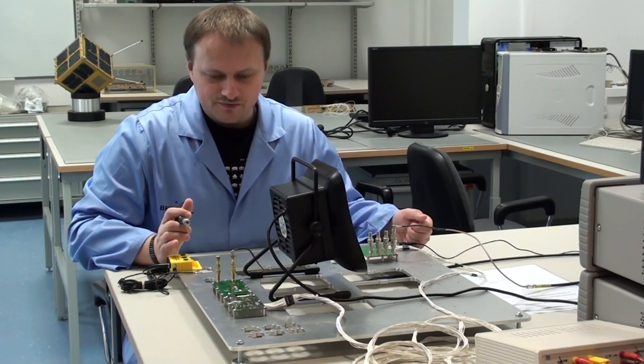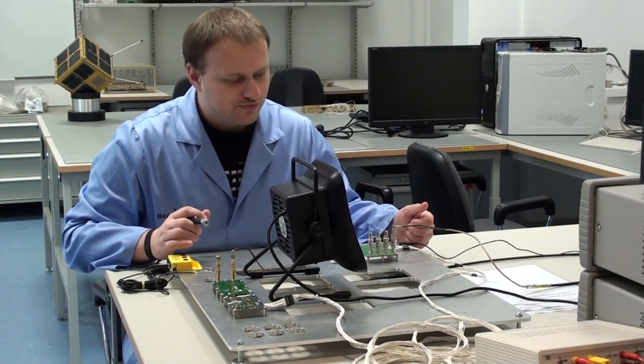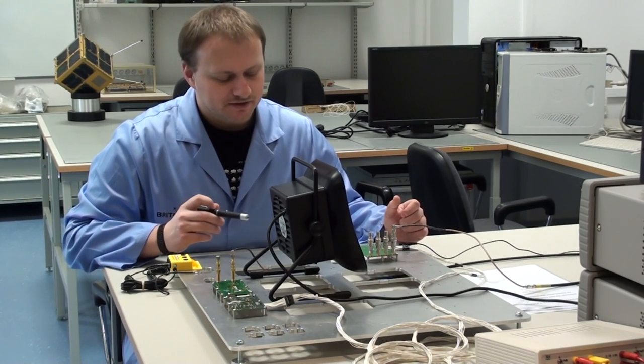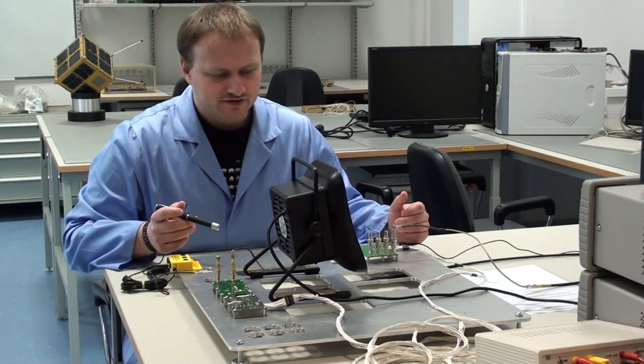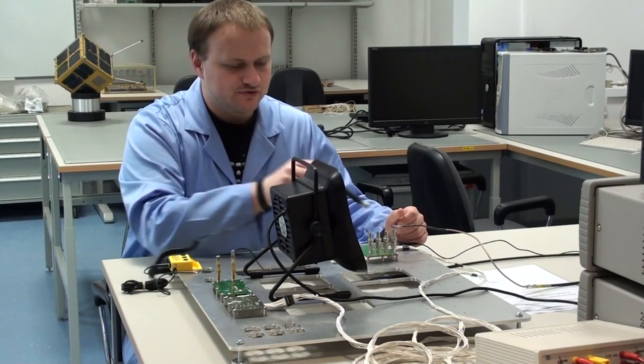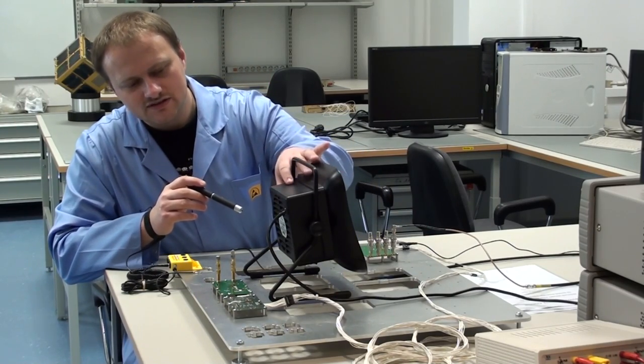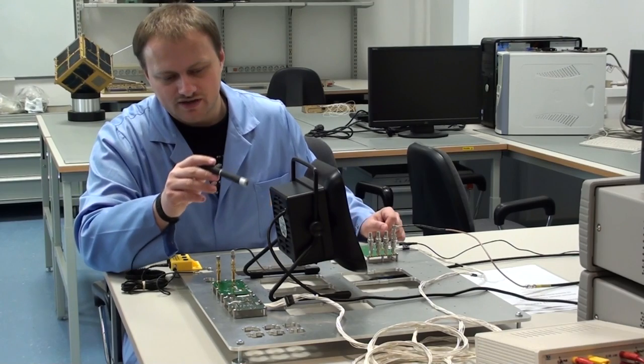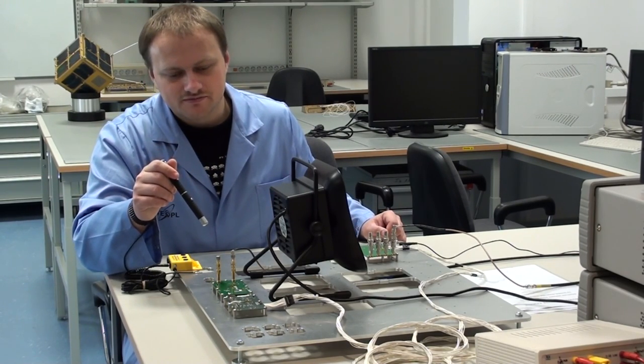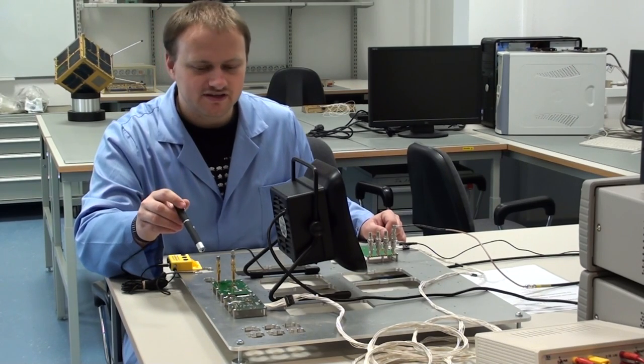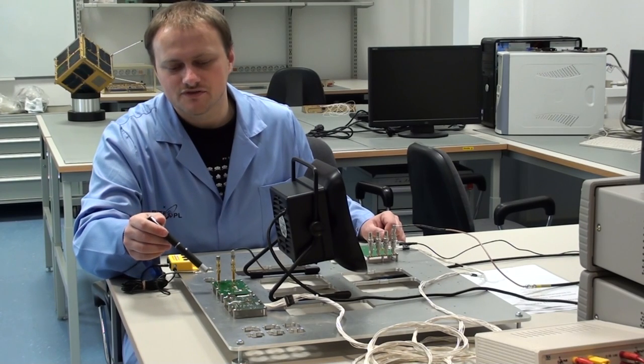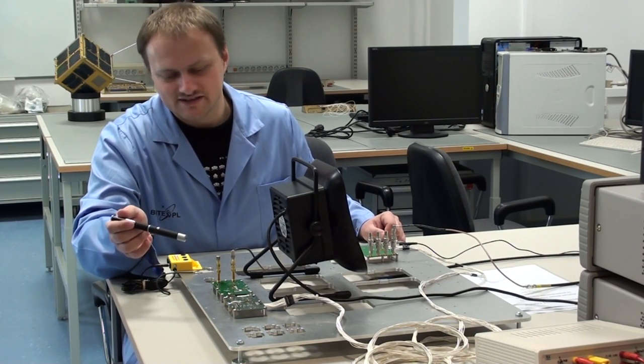Ta aluminiowa płyta jest zwana flat satem, czyli taką płytą, na której będą zamontowane wszystkie komponenty satelity do testowania ich tutaj w laboratorium. W tej chwili mamy zainstalowany moduł nadajnika oraz moduł odbiornika oraz mamy postawiony wentylator, który tutaj owiewa nadajnik powietrzem. Docelowo nadajnik będzie zamknięty w metalowe pudełko i ciepło stopni końcowych będzie odprowadzane na obudowę satelity.